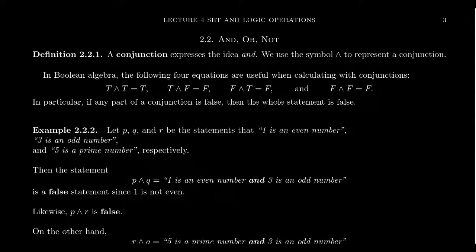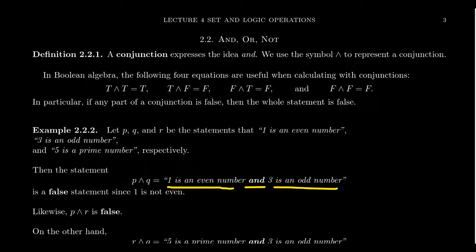If we consider the statement P and Q — that's how you read a conjunction, you just say the word 'and'. Many of us will forget the word 'conjunction' unless you saw that Schoolhouse Rock song. P and Q means one is an even number and three is an odd number. That's how you read it.